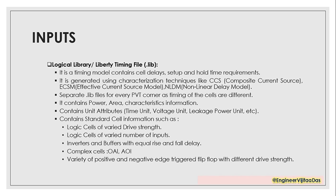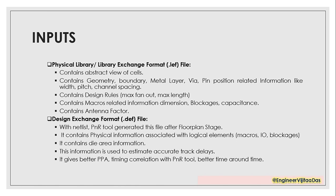The dot-lib file also contains power and area characteristics. It contains unit definitions for time, voltage, leakage, capacitance, and resistance. It includes standard cell information like logical cells with different drive strengths, different number of inputs, inverters and buffers with equal rise and fall delays, complex cells like OAI and AOI, and all flip-flop types - positive and negative edge-triggered flip-flops with different drive strengths.